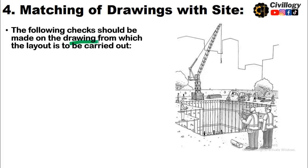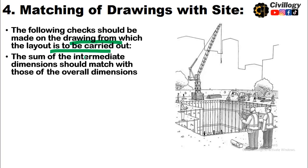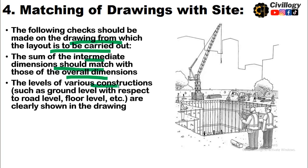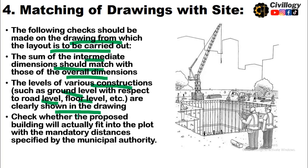The fourth step is matching of drawings with the site. The following checks should be made: the sum of intermediate dimensions should match the overall dimensions; levels of various construction elements such as ground level with respect to road level and floor level should be clearly shown; and it should be verified that the proposed building will fit into the plot within mandatory distances specified by the municipal authority.